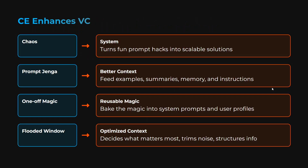How does context engineering enhance vibe coding? It turns chaos into something systematic — turning fun prompt hacks into scalable solutions. You feed examples, summaries, and memories to build better context. Out of 10 vibe coding prompts, one might work — once you figure out that one prompt, it becomes context engineering. Every LLM has limited memory, and when prompting via vibe coding you're not using that memory efficiently. With context engineering, you use it efficiently by reducing trash.